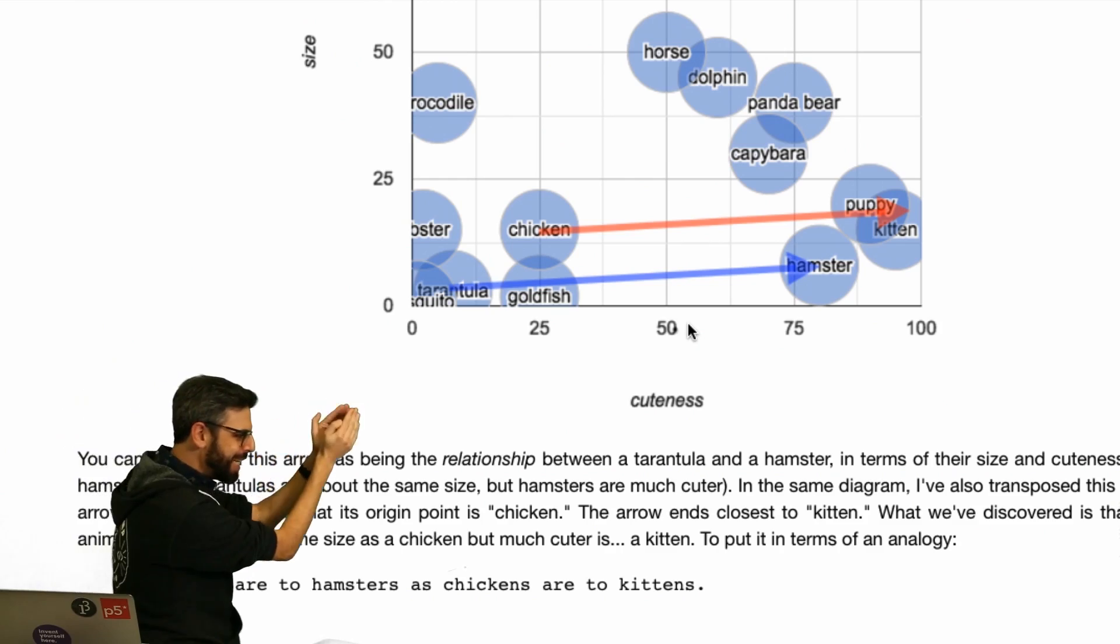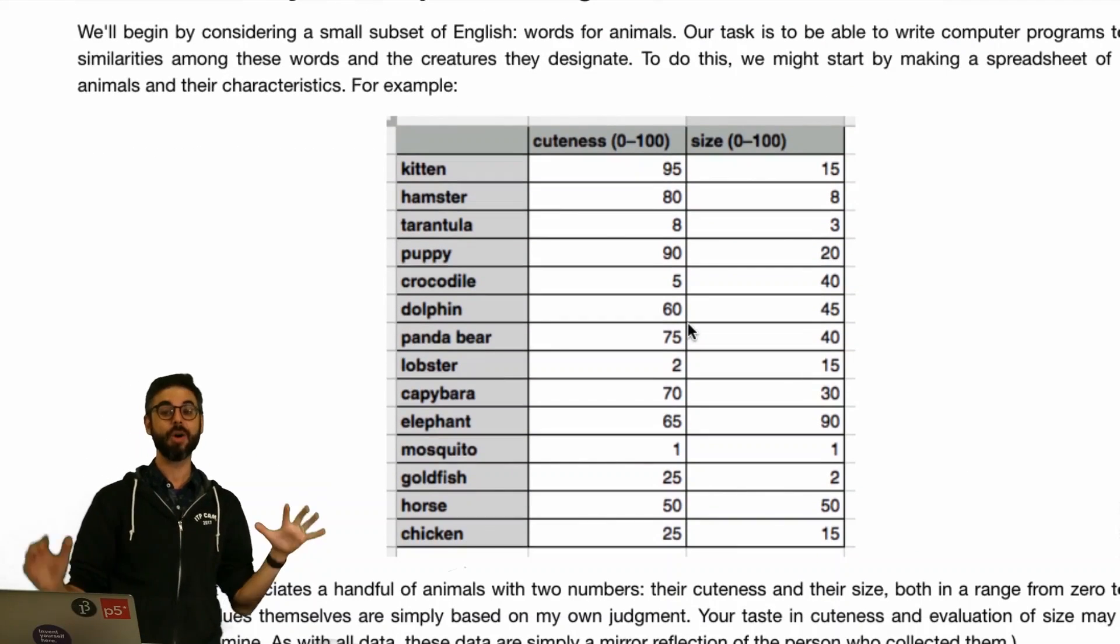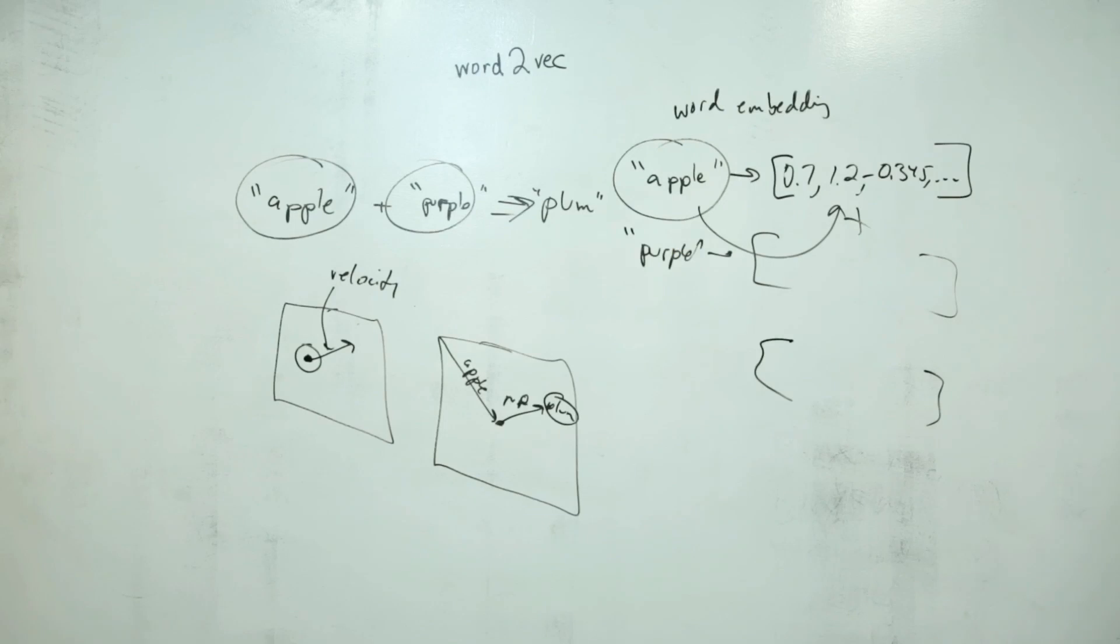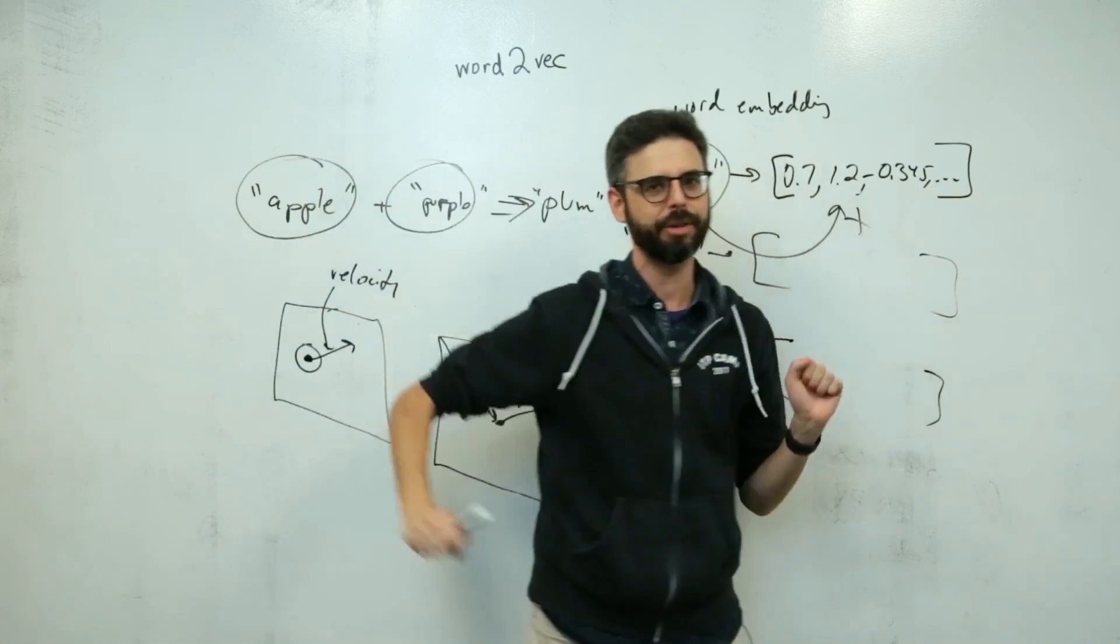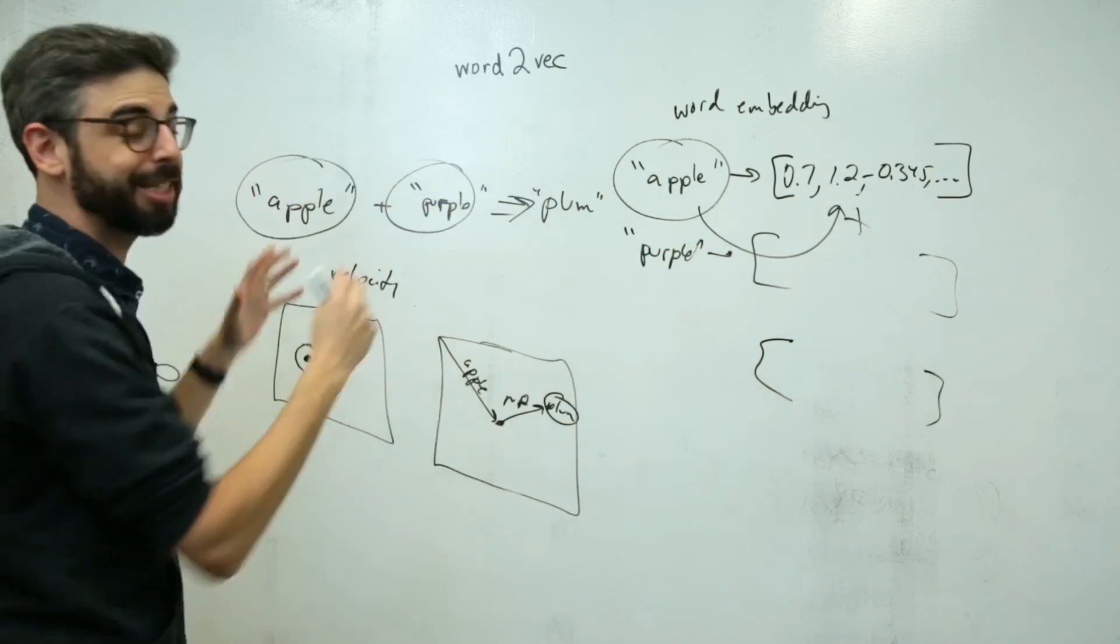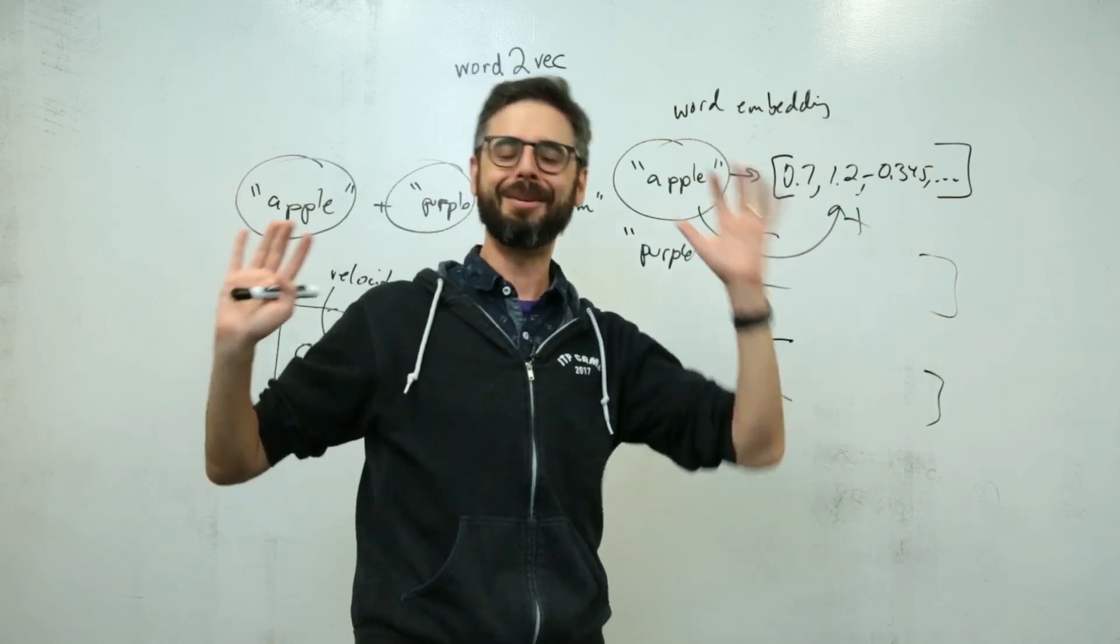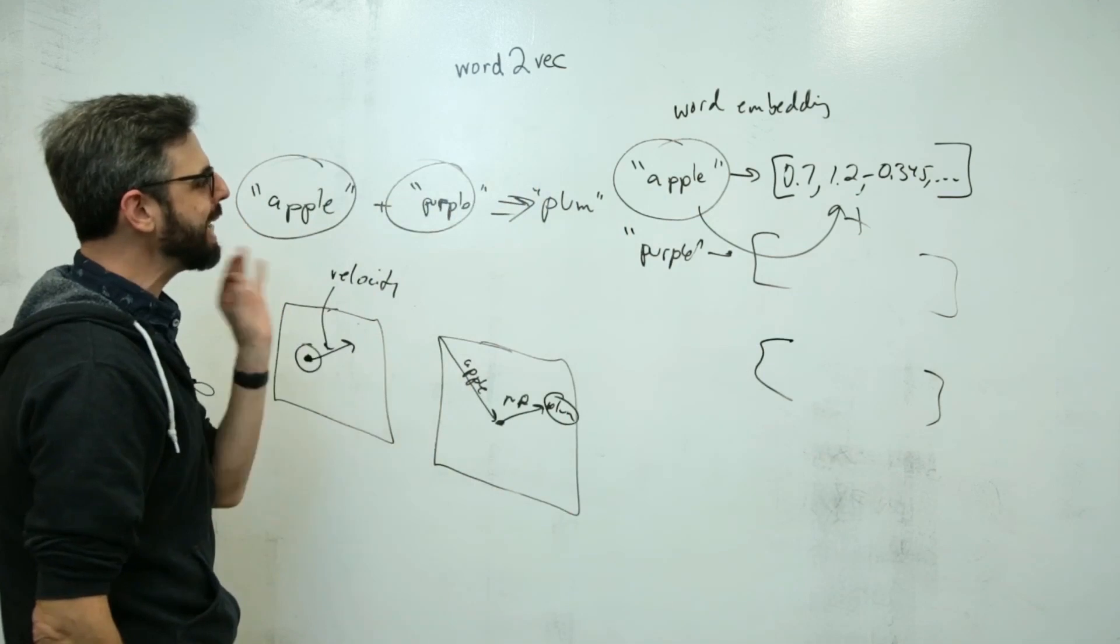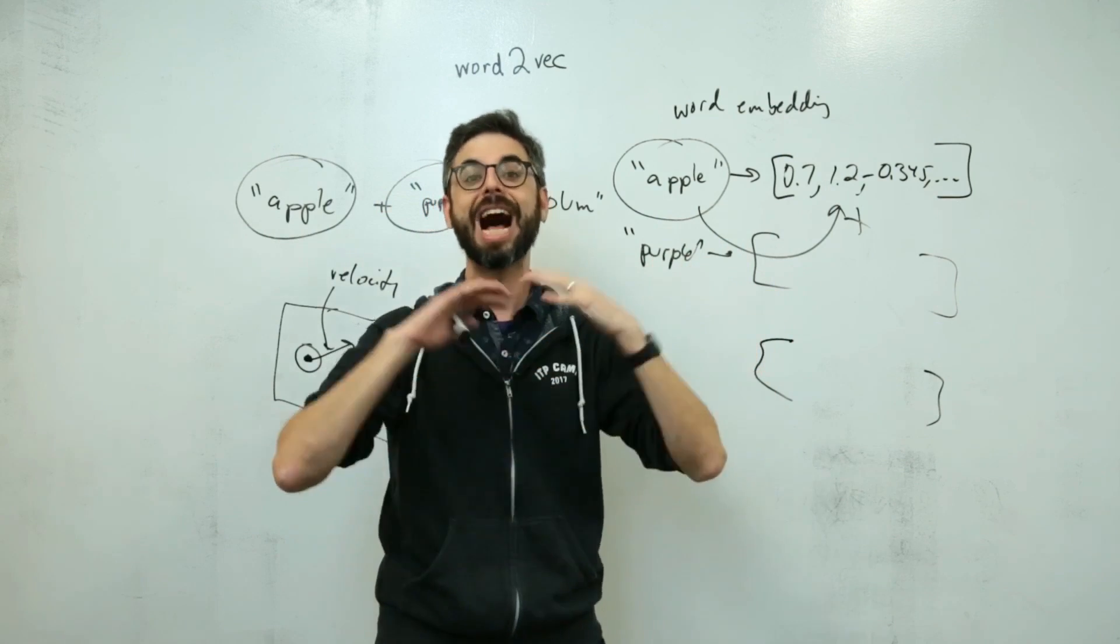So what Allison is showing here is by moving from, let's say, one word to another word physically in space, we can establish this idea of word relationships. Chicken is to kitten as tarantula is to hamster. Now this is all very arbitrary with like hard coded word vectors. So the - but this is just for demonstration purposes and in two dimensions so that our brains can kind of process it. Ultimately, if we have a lot more information somehow about all of these words in higher dimensional space, in vectors that have a hundred dimensions, a hundred numbers, we can't visualize that so easily.